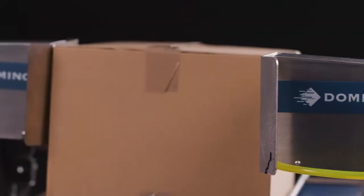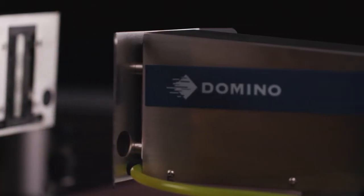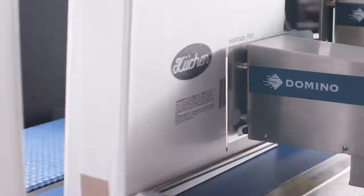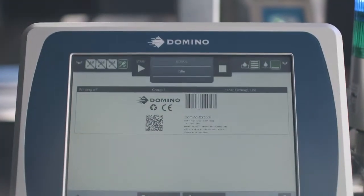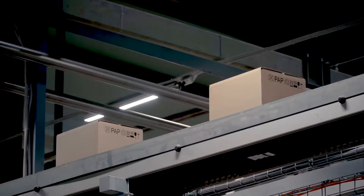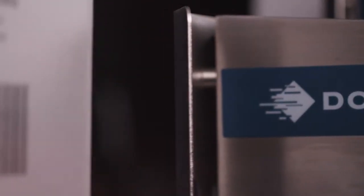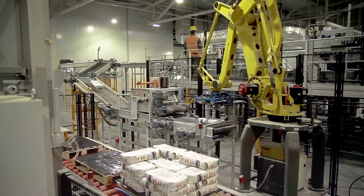Big on Boxes, Domino's high-resolution printer with a big impact. With the Domino CX350i on your production line, you can create durable, high-contrast large prints on boxes, trays and sacks.